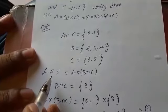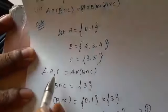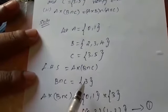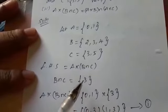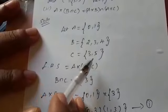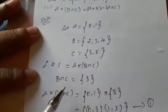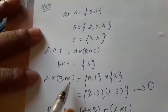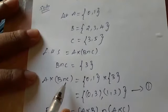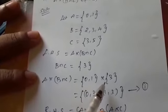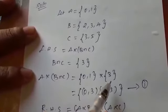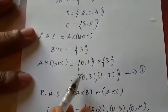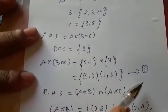We have to find LHS: A × (B ∩ C). First, find B ∩ C — the common elements of B and C. So B ∩ C = {3}. Next, A × (B ∩ C): multiply A into {3}. So we get (0, 3) and (1, 3). This is equation 1.